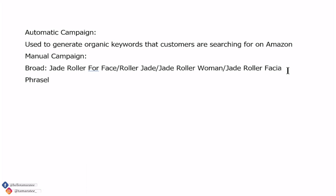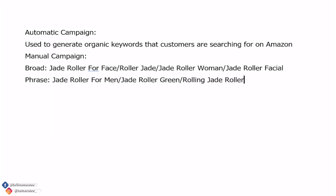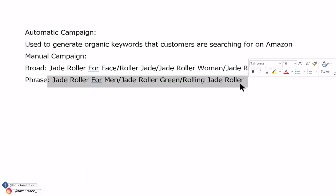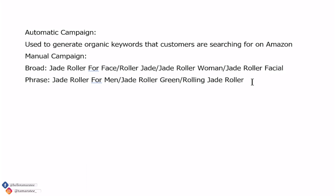Phrase keywords are a little different. If I put the keyword 'jade roller' into a phrase match type manual PPC campaign, I may end up with keywords such as jade roller for men, jade roller green, or rolling jade roller. With a phrase match type PPC campaign, the keyword 'jade roller' will always be together in the phrase results.